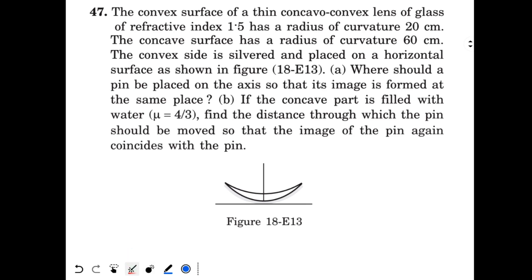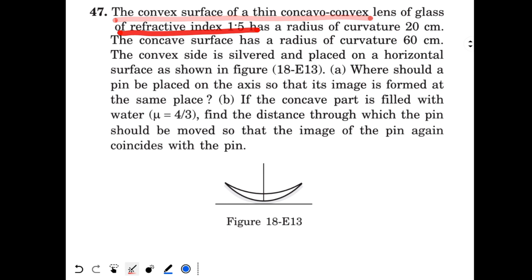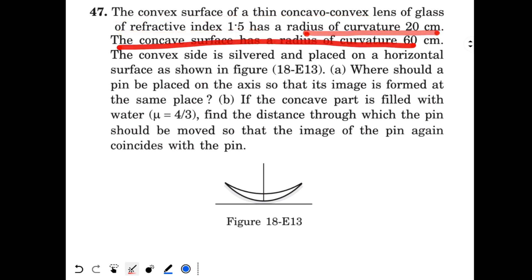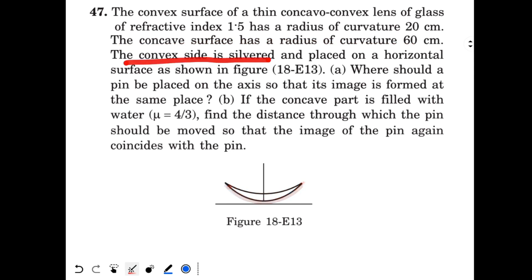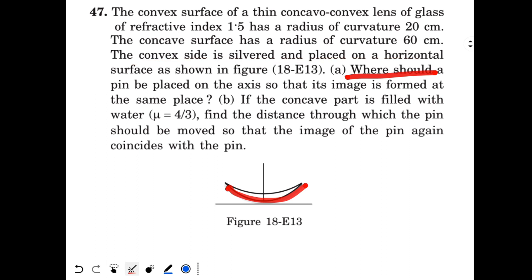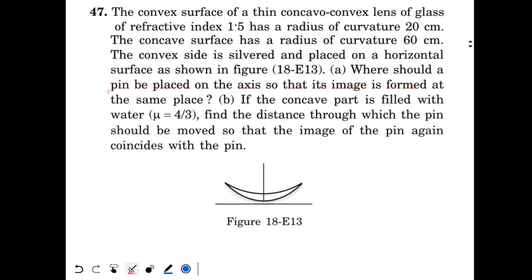Now see this question. This is question number 47 from H.C. Verma chapter number 18. The convex surface of a thin concavo-convex lens of glass of refractive index 1.5 has radius of curvature 20 cm and the concave surface has radius of curvature 60 cm. The convex side is silvered and placed on a horizontal surface. Where should a pin be placed on the axis so that its image is formed at the same place?